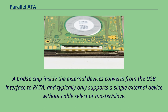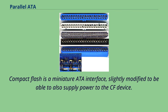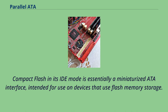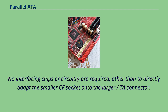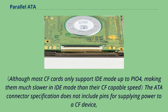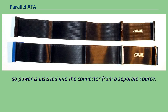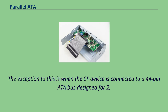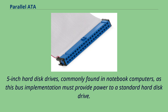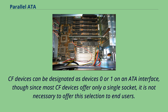CompactFlash is a miniature ATA interface, slightly modified to also supply power to the CF device. CompactFlash in its IDE mode is essentially a miniaturized ATA interface intended for use on devices that use flash memory storage. No interfacing chips or circuitry are required other than to directly adapt the smaller CF socket onto the larger ATA connector. The ATA connector specification does not include pins for supplying power to a CF device, so power is inserted into the connector from a separate source. The exception is when the CF device is connected to a 44-pin ATA bus designed for 2.5-inch hard disk drives, commonly found in notebook computers, as this bus implementation must provide power to a standard hard disk drive. CF devices can be designated as device 0 or 1 on an ATA interface. Although CF can be hot-pluggable with additional design methods, by default when wired directly to an ATA interface, it is not intended to be hot-pluggable.